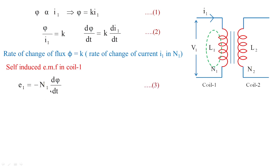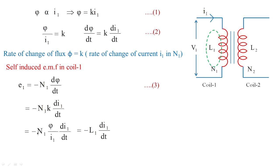Treating this as equation 3 and substituting the value of phi — phi is equal to k*I1 — it becomes minus N1*k * dI1/dt. Substituting the value of k as phi/I1, we get N1*phi/I1, which we read as L1. Equation 4 is written from equation 3. Thereby the self-inductance of coil 1 is obtained as L1 equals N1*phi/I1, and this is treated as equation 5.